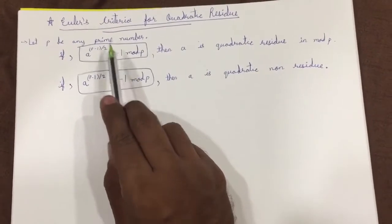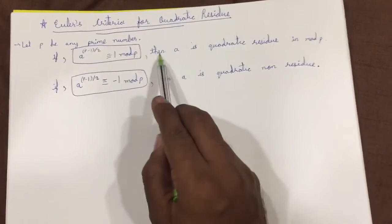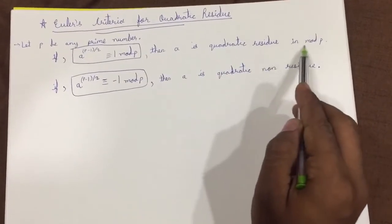So here let p be any prime number. Now if a raise to p minus 1 whole divided by 2 congruent to 1 mod p, then the value a is considered as quadratic residue in mod p.